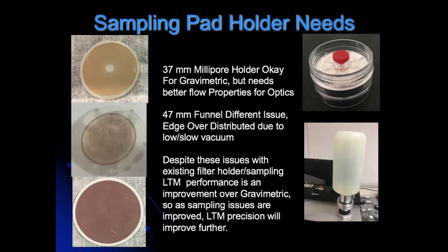What are the sampling pad holder needs? The 37mm Millipore holder is okay for gravimetric but needs better flow properties for optics. The 47mm funnel has a different issue — edge over-distribution due to slow low vacuum, as it doesn't have enough flow for a vacuum pump. Despite these issues with existing filter holder sampling, LTM performance is an improvement over gravimetric, and LTM precision will improve further over time.